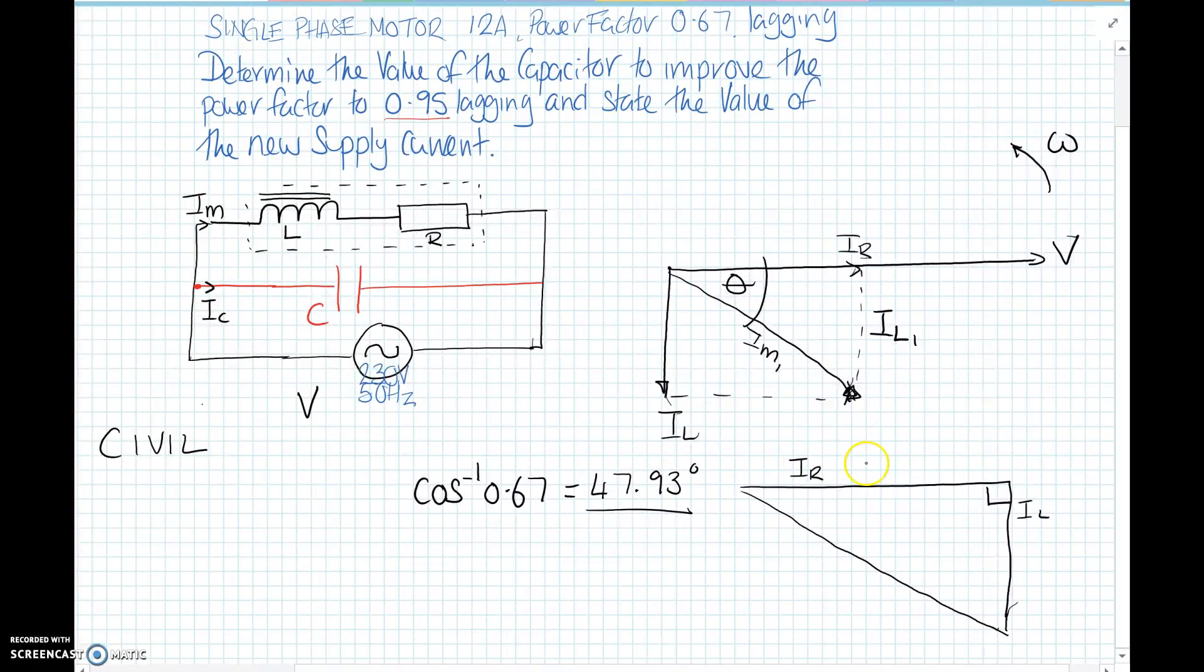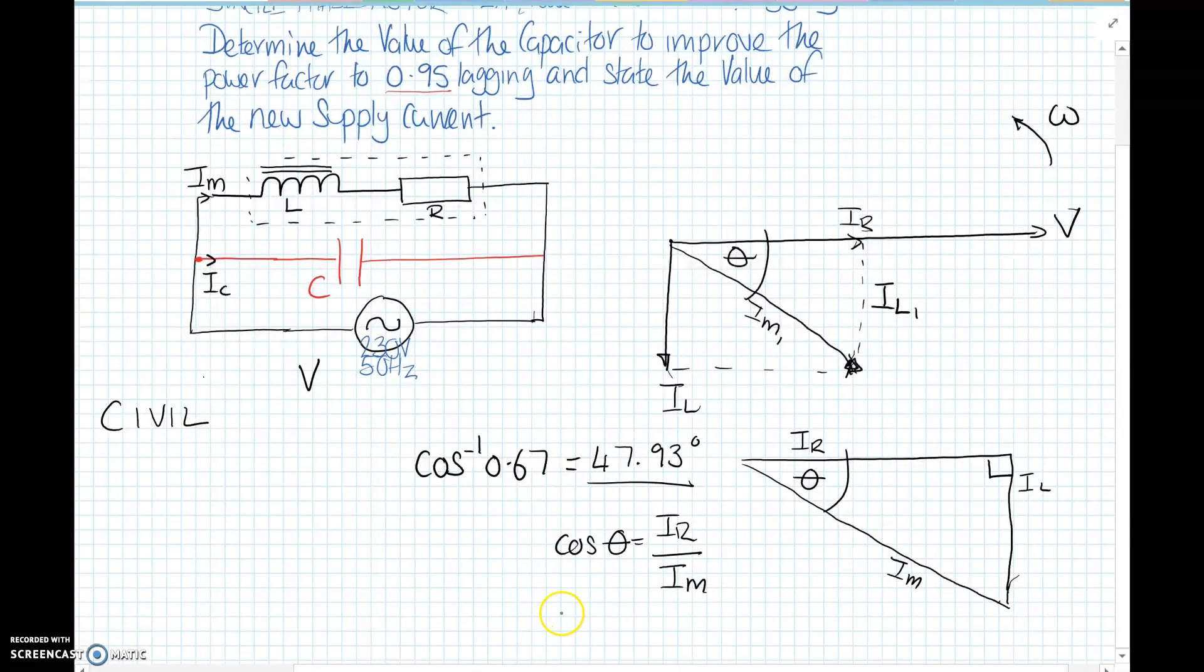So let's just work out all the sides of this current triangle. It's all trigonometry. If that's IM, quick recap, SOHCAHTOA. The cosine of the angle is the adjacent, IR, divided by the hypotenuse, IM. And also, what we have is IL, so the opposite side, is the hypotenuse times the sine of the angle. SOHCAHTOA. Remember, sine is opposite over hypotenuse. So what we've done there is we've just rearranged that to get IL.